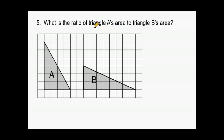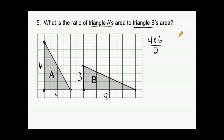For this problem, we have to figure out the ratio of triangle A's area to triangle B's area. The base of triangle A has a length of four and the height is six. For triangle B, the base is eight and the height is three. To find the area of each triangle, we multiply base times height and divide by two.